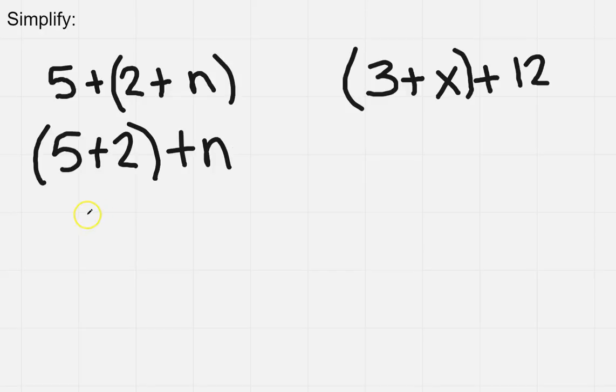And then I just take 5 plus 2, which is 7, plus n. Now how you can remember is you want to add like things. So I need numbers to add together and letters stay by themselves.